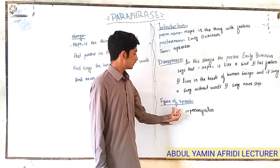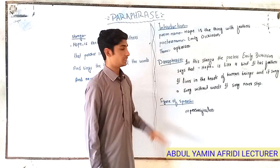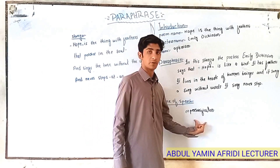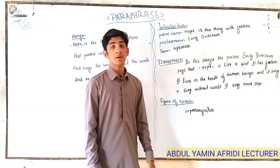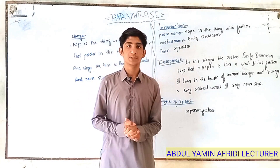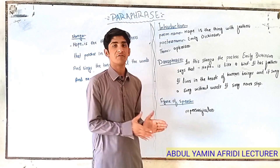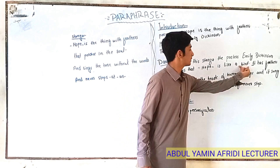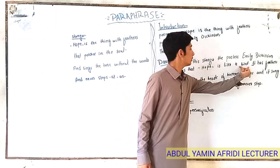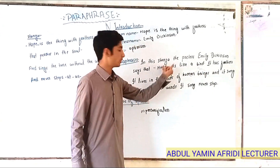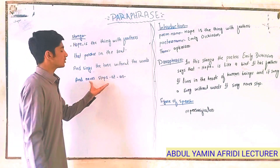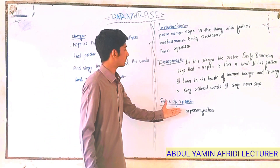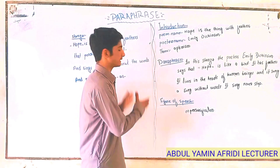After the paraphrase, we determine the figure of speech — which figure of speech is present in this stanza? I find only one figure of speech, whose name is personification. Personification is a figure of speech in which the property of a living organism is given to a non-living thing. For example, here hope is non-living but a bird is living, so the property of a bird is given to hope. So we can write paraphrase of a stanza directly, but the method of introduction, paraphrase, and figures of speech is the very best method for writing paraphrase.